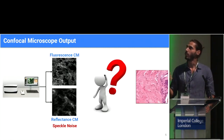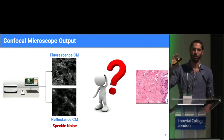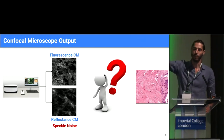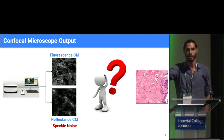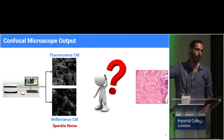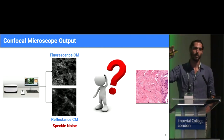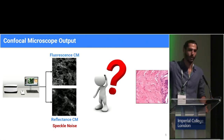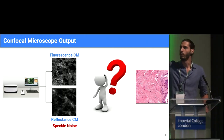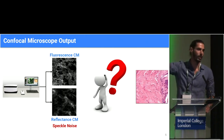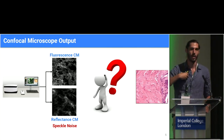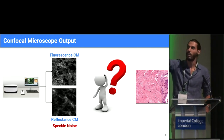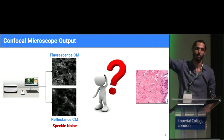The output of the confocal microscopy — at least of the commercial version of the confocal microscope — consists of two images: the fluorescence image and the reflectance image, which is in fact polluted with speckle noise. Our objective is to propose an architecture to transform these two images and combine them to produce another one which is similar to the histology domain, so that pathologists can diagnose directly on these images instead of having to learn the confocal domain.